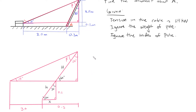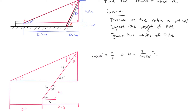The first thing we're going to do is find H. Using this right triangle, cosine 30 equals 2 over H, so H equals 2 divided by cosine of 30, which equals 2.309 meters.